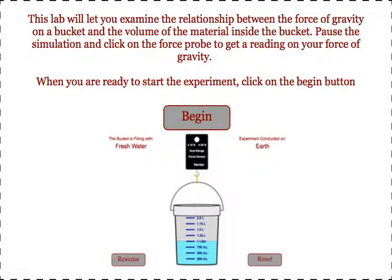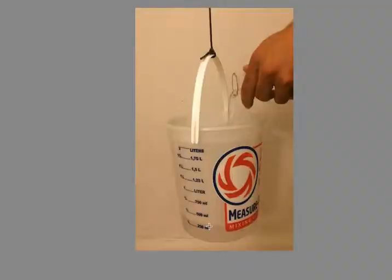The way this lab works is students will take a bucket that is graduated in 250 milliliter increments. They will fill the buckets to various levels. They will attach the bucket via a string to a Vernier force probe. They will measure how much force there is on the bucket at different volume levels for the fluid or material that they are placing in the bucket.